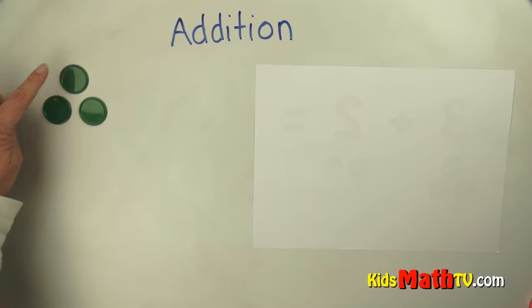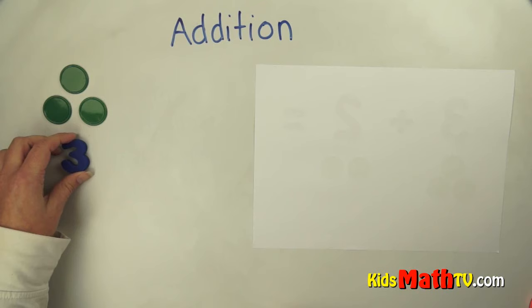So one, two, three. We can represent three with the number three. So three and three.